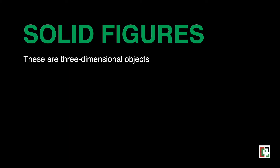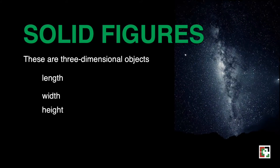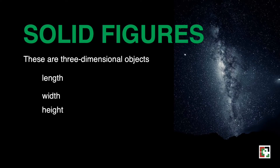Solid figures are three-dimensional objects, meaning they have length, width, and height. Because they have three dimensions, they have depth and take up space in our universe.